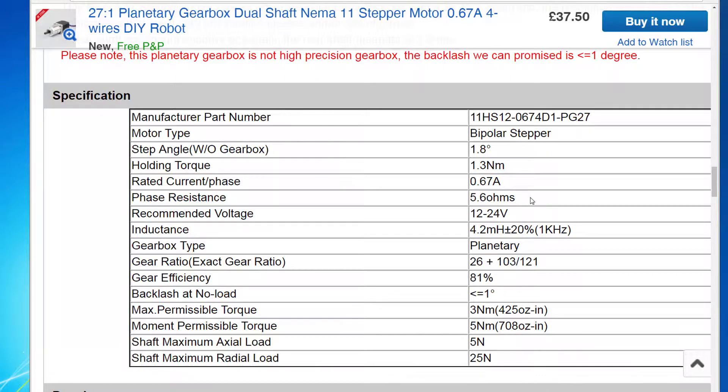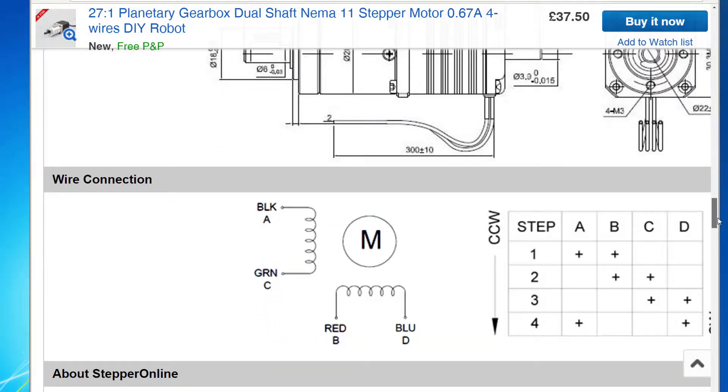So if you multiply those two together you get 3.8 volts, so you could run this motor at 3.8 volts at full current so long as you didn't step it too fast. They say the recommended voltage is 12 to 24 volts, but I'm going to be running it at five volts.